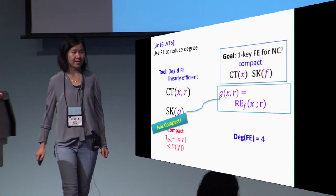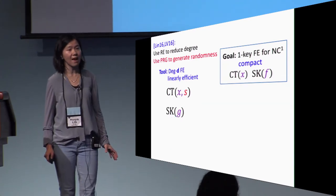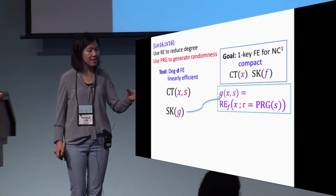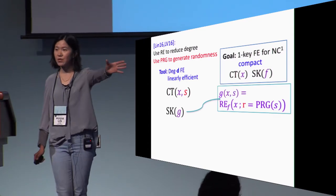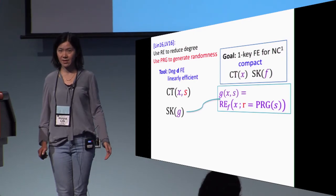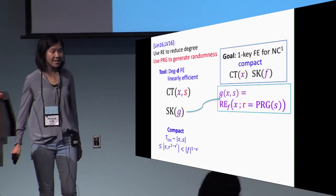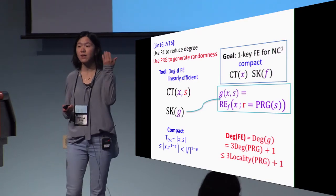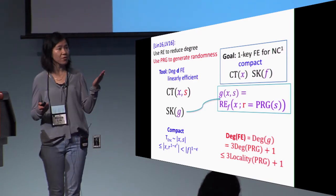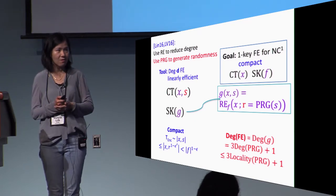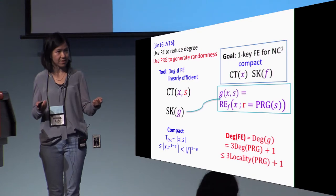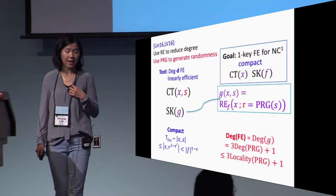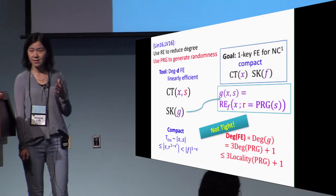To salvage compactness, the natural idea is to say that I will not directly encrypt the random bits, but rather encrypt the seed of a PRG. So that later on in the function G, it will first take the seed, expand it to the random output, and then compute the randomized encoding. Now, with this change, encryption becomes sublinearly efficient. However, the drawback is that the degree of the functional encryption goes up. Now it becomes three times the PRG degree plus one. Why? Because RE has degree three in the random bits, and these random bits are now computed using PRGs. This is only bounded by three times the locality of PRG plus one, and this is definitely not tight.